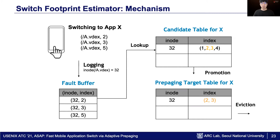It is possible that page information in the pre-paging target table becomes obsolete due to the changing context of applications. So, if a page in the pre-paging target table is not used in switch time, it is evicted from the table.